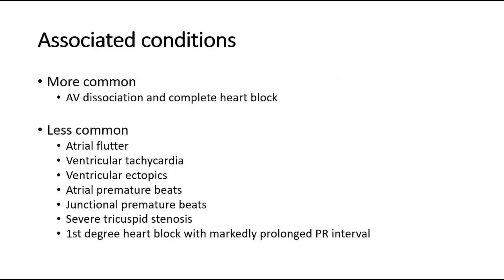Canon A waves are more commonly associated with AV dissociation and complete heart block. Other less common causes are atrial flutter, ventricular tachycardia, ventricular ectopics, atrial premature beats, junctional premature beats, severe tricuspid stenosis, and first-degree heart block with markedly prolonged PR interval.